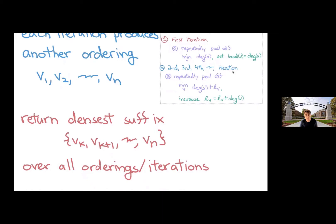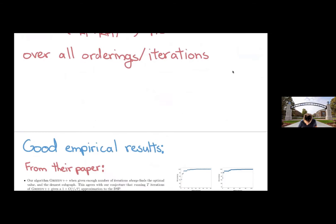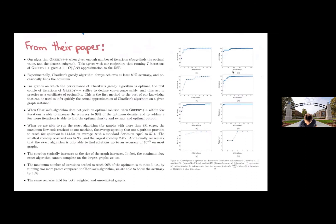So each iteration generates a different peeling order that gives some candidates for the densest subgraph. So it's got kind of a nice natural algorithm. And in their paper, they show a lot of good empirical results. I sort of just copied and pasted some stuff. In situations where I guess the original peeling algorithm didn't get the exact algorithm but was very close, in only a couple more iterations is often able to identify the exact densest subgraph. They can of course run an exact algorithm to verify this.